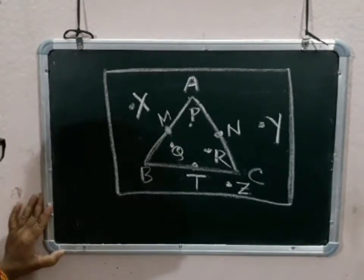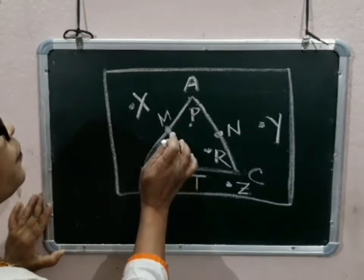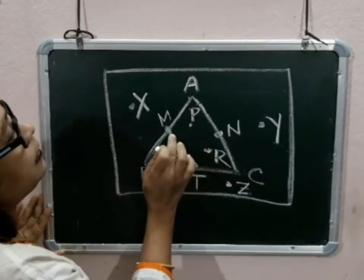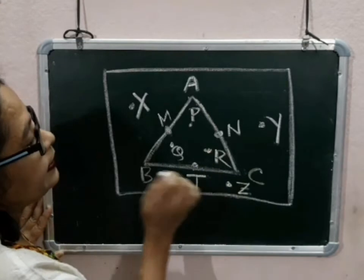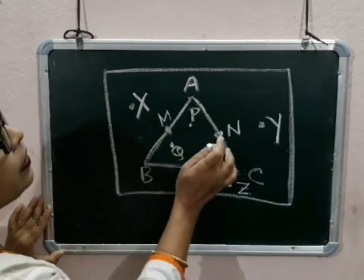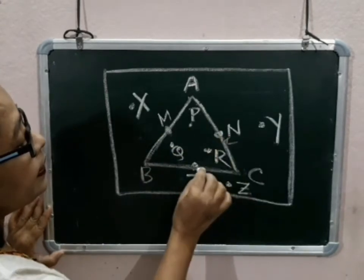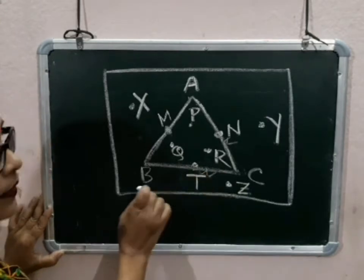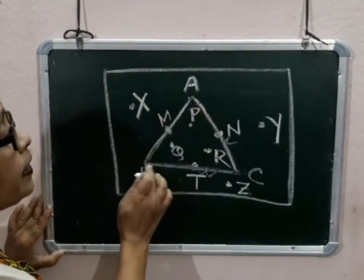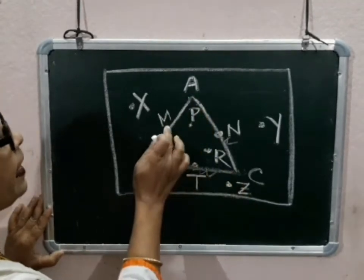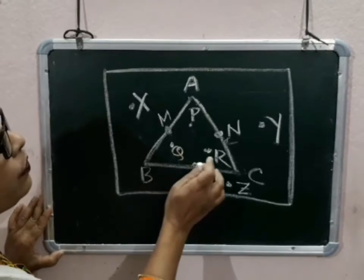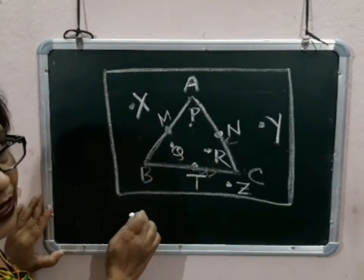Now let us look at other points: point M, N and point T. Where are the points M, N and T? M lies on the triangle ABC, N also lies on the triangle ABC, T also lies on the triangle ABC. The points of triangle ABC — M, N, T — as well as the interior points P, Q, R are called the triangular region.